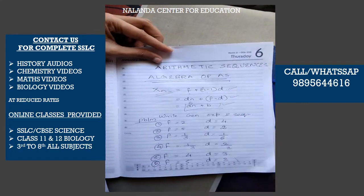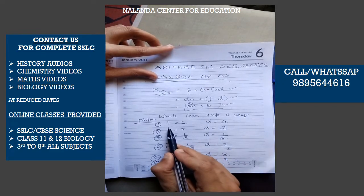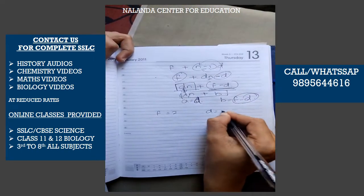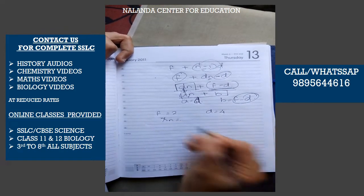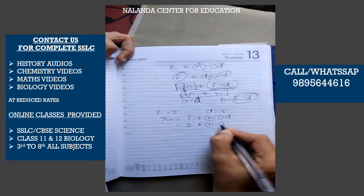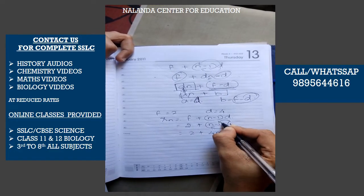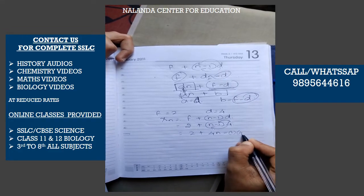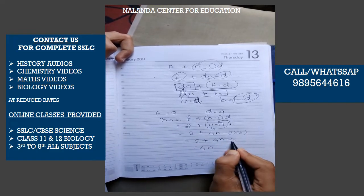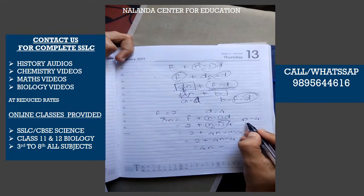Applying the formula f + (n-1)d to the sequence: the general expression is 2. Common difference is 4. So xn = 2 + (n-1) into 4. Expanding: 2 + 4n minus 4, which simplifies to 4n minus 2.